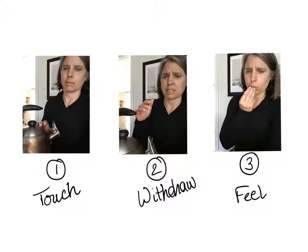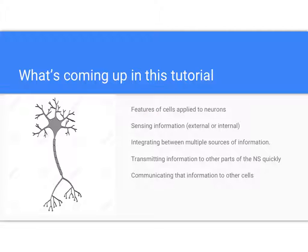We'll come back throughout the tutorial to this experience and think about what different neurons are involved and what they look like. In this tutorial, you'll learn about what aspects of neurons are critical to their function, how they are just like other cells, and how they are special — what functions they have that allow them to sense information, integrate multiple sources of information, and transmit that information to other parts of the nervous system quickly, which is their primary function.